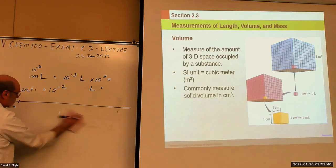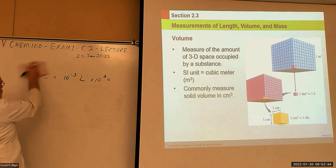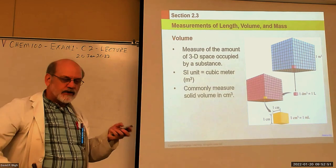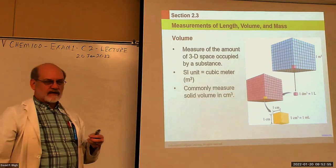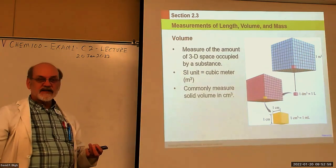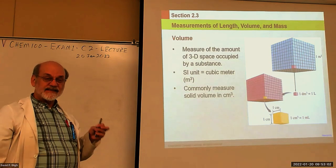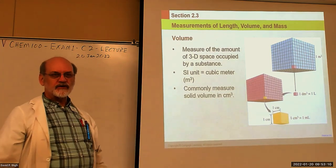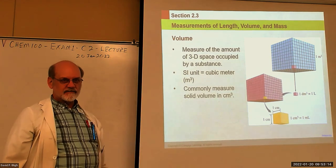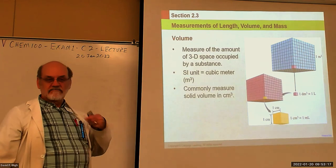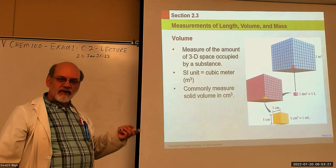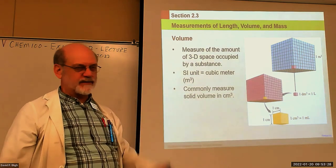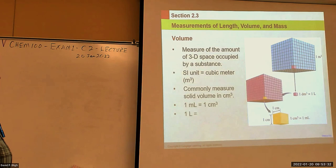An interesting point: a cubic centimeter equals a milliliter. In the medical profession, everything used to be marked in cc's — cubic centimeters — rather than cm³, because printers couldn't easily print superscripts. Nowadays everything is marked in milliliters, but physically they are exactly the same size. A milliliter and a cubic centimeter are exactly the same.